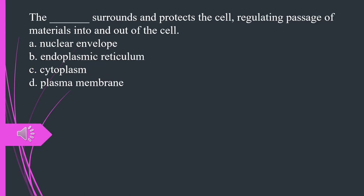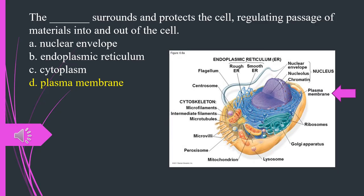What surrounds and protects the cell, regulating passage of materials into and out of the cell? A. Nuclear envelope. B. Endoplasmic reticulum. C. Cytoplasm. D. Plasma membrane. The answer is D. Plasma membrane.